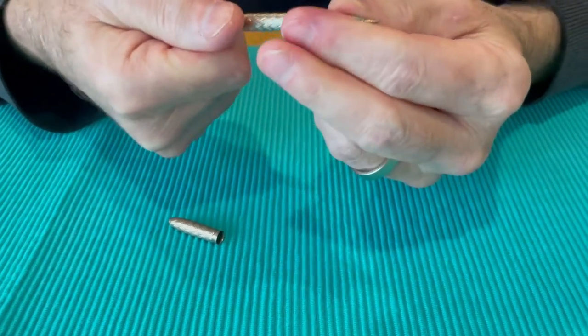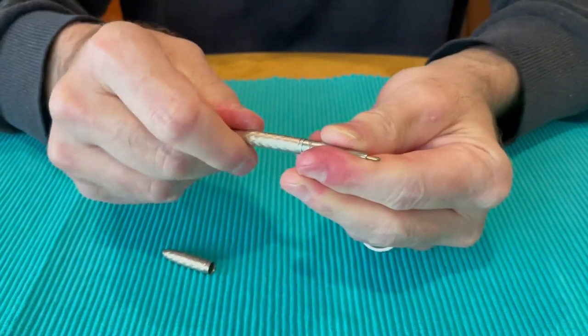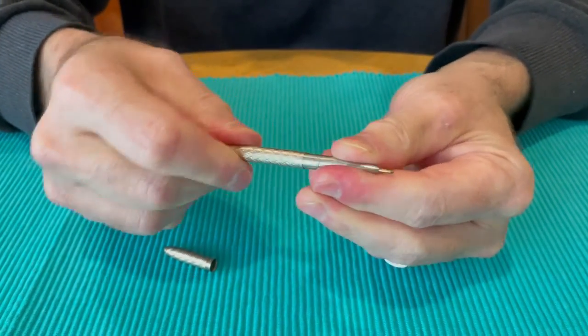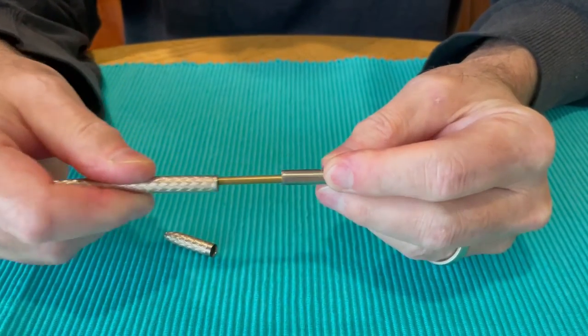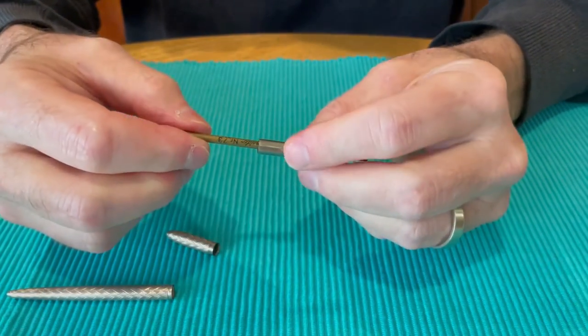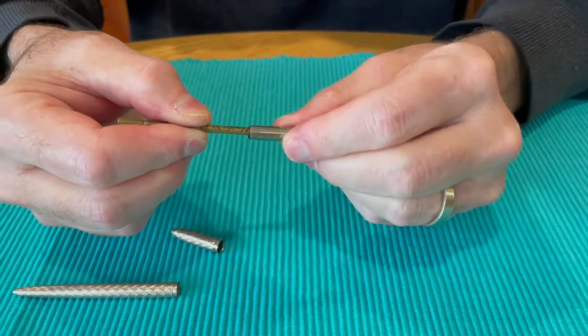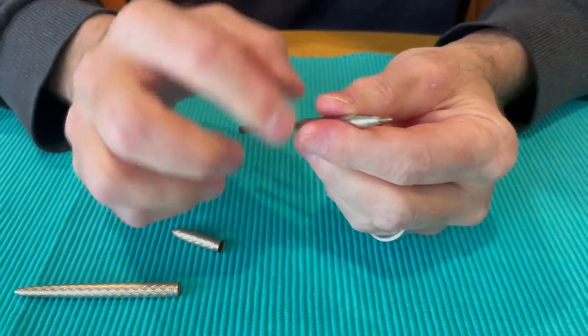So you have to unscrew this. Well it doesn't really unscrew, it just kind of pulls off. And this looks like it could be the original. And it's tight, it's pretty tight in there.